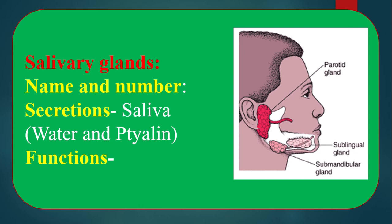The salivary glands secrete saliva, which contains water and ptyalin. Water makes our food slippery so that we may swallow it easily. Ptyalin, the other component of saliva, helps to digest carbohydrates and convert them into a simple form.